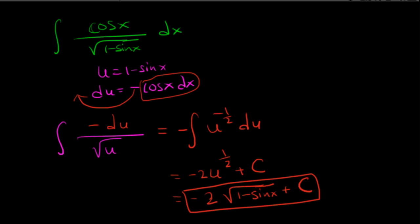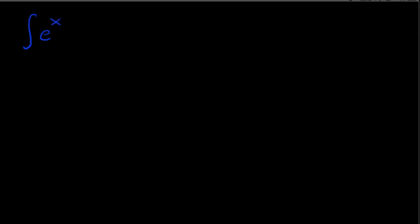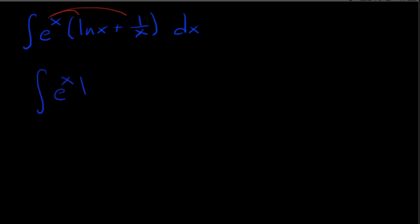Let's look at another integral: the integral of e to the x times natural log of x plus 1 over x dx. There are two ways to do this — first I'll show the shortcut, then the longer way. For the shortcut, I'm going to distribute e to the x to both terms, giving e to the x times natural log of x plus e to the x times 1 over x.